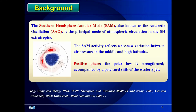The Southern Hemisphere Annular Mode, also known as the Antarctic Oscillation, is the principal mode of atmospheric circulation in the Southern Hemisphere extratropics. The SAM reflects a seesaw variation between air pressure in middle and high latitudes. A positive phase of the SAM means the polar low is strengthened, accompanied by a poleward shift of the westerly jet.